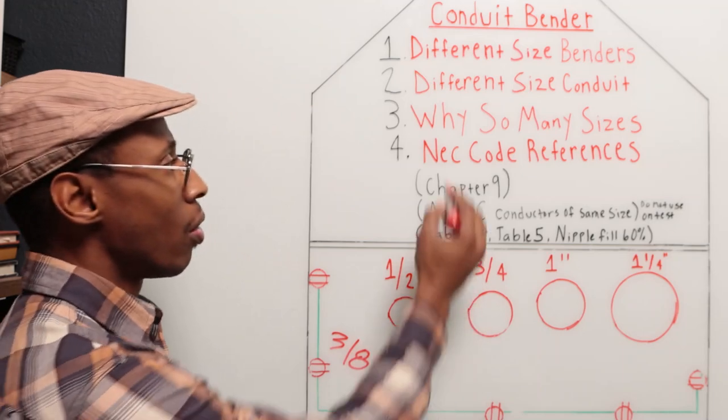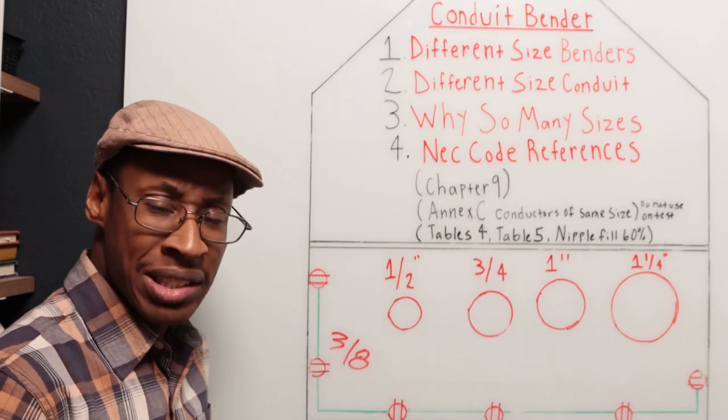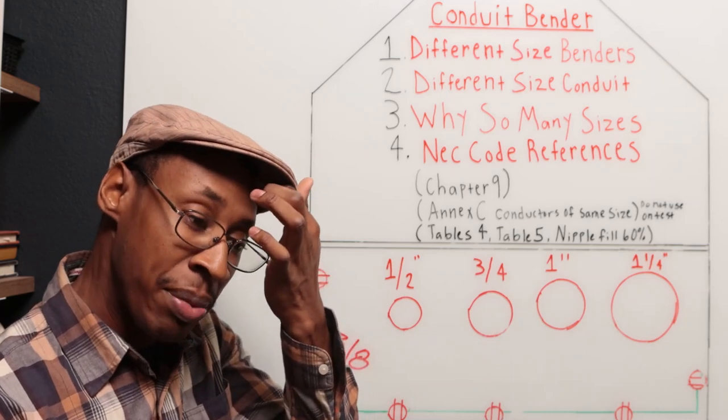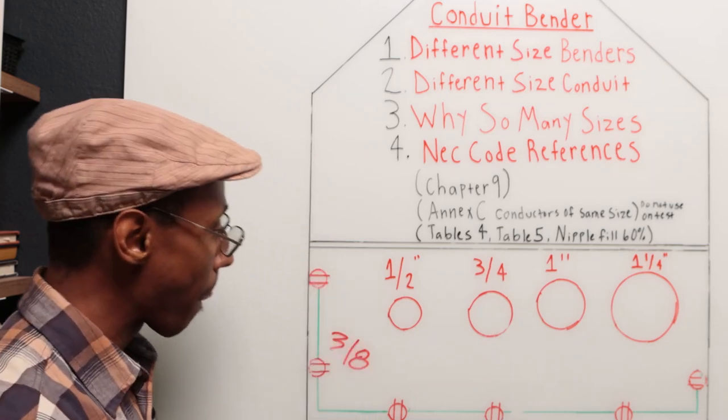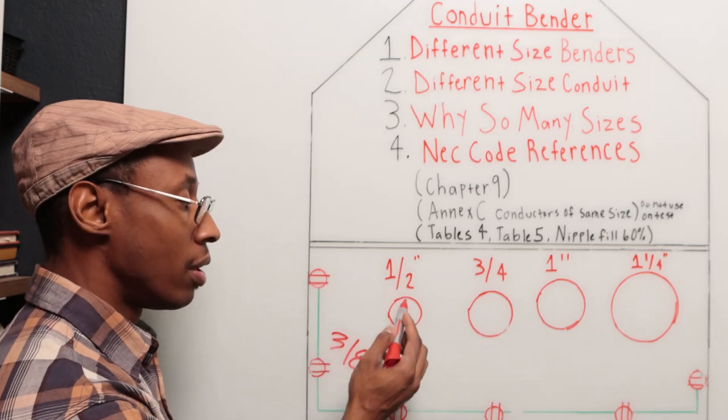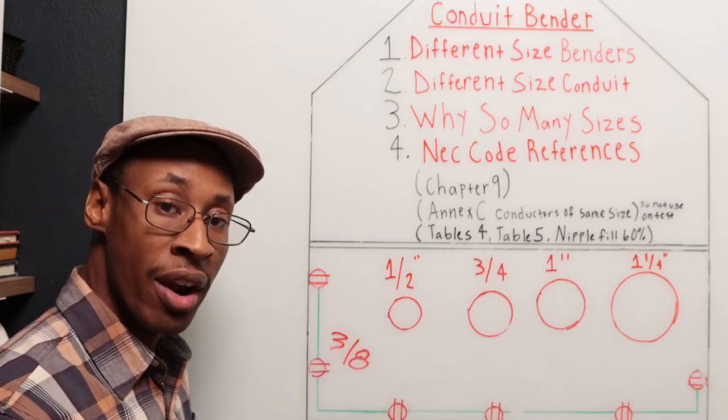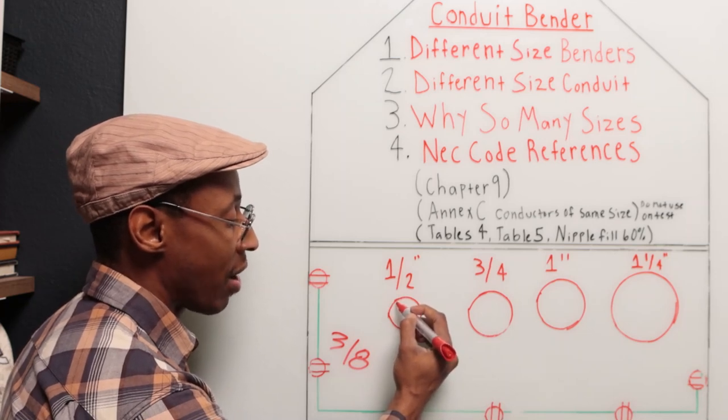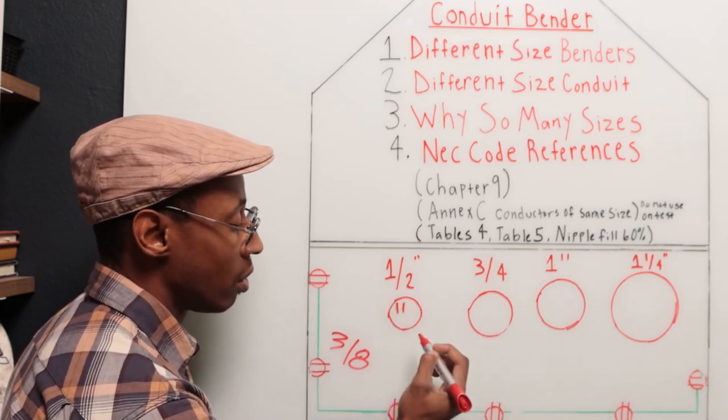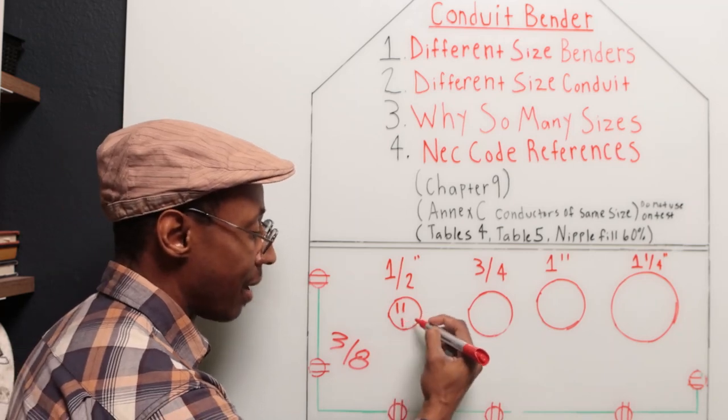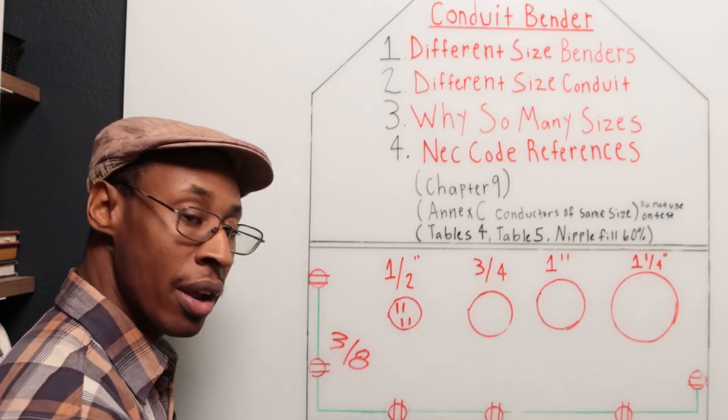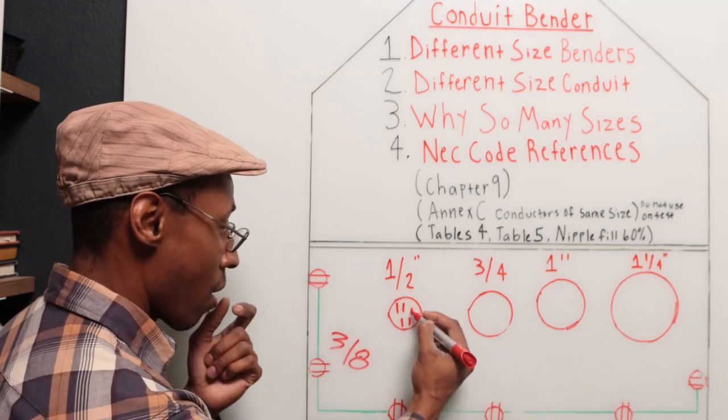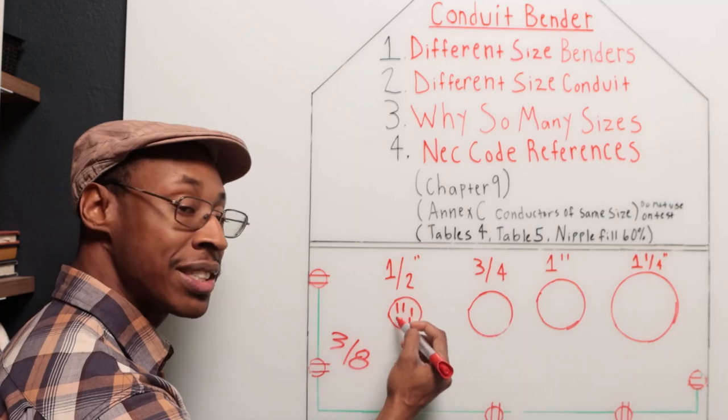Now, why so many sizes? Well, there's several reasons for that. So let's keep this short and simple. So this half inch pipe can only hold so many wires. You may be able to get, let's say you have a hot, a neutral. That's one circuit. A hot and another neutral. That's one circuit. Then you may have a ground wire because you can't fill this conduit up to capacity because then you won't be able to pull the wire through.